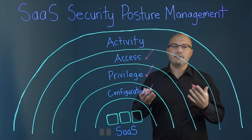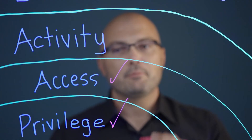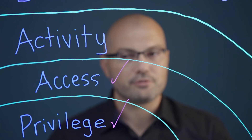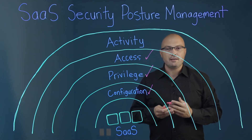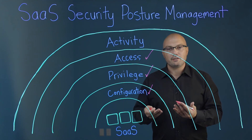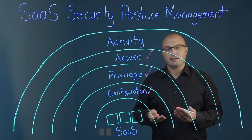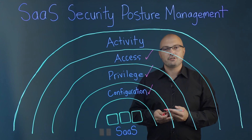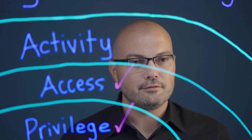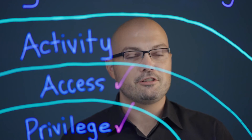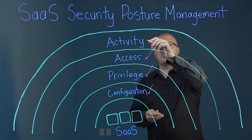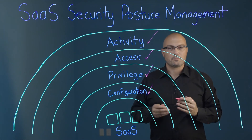You need to analyze activity, but you also need activity to help you with these other principles. When you see a misconfiguration and then you see your activity in your SaaS app, you can see whether or not people are taking advantage of that weakness. If no one's taking advantage, just fix it. If everyone's taking advantage, then you better fix it — that's a lot of risk. So you really need to make sure activity is incorporated.